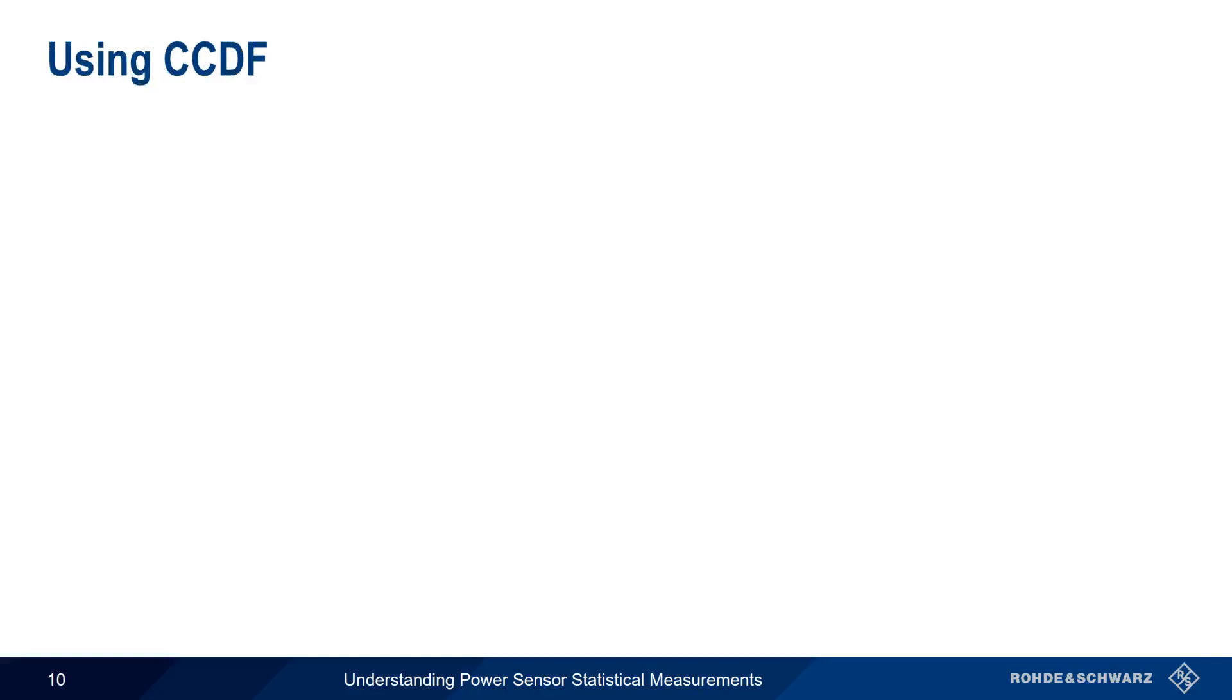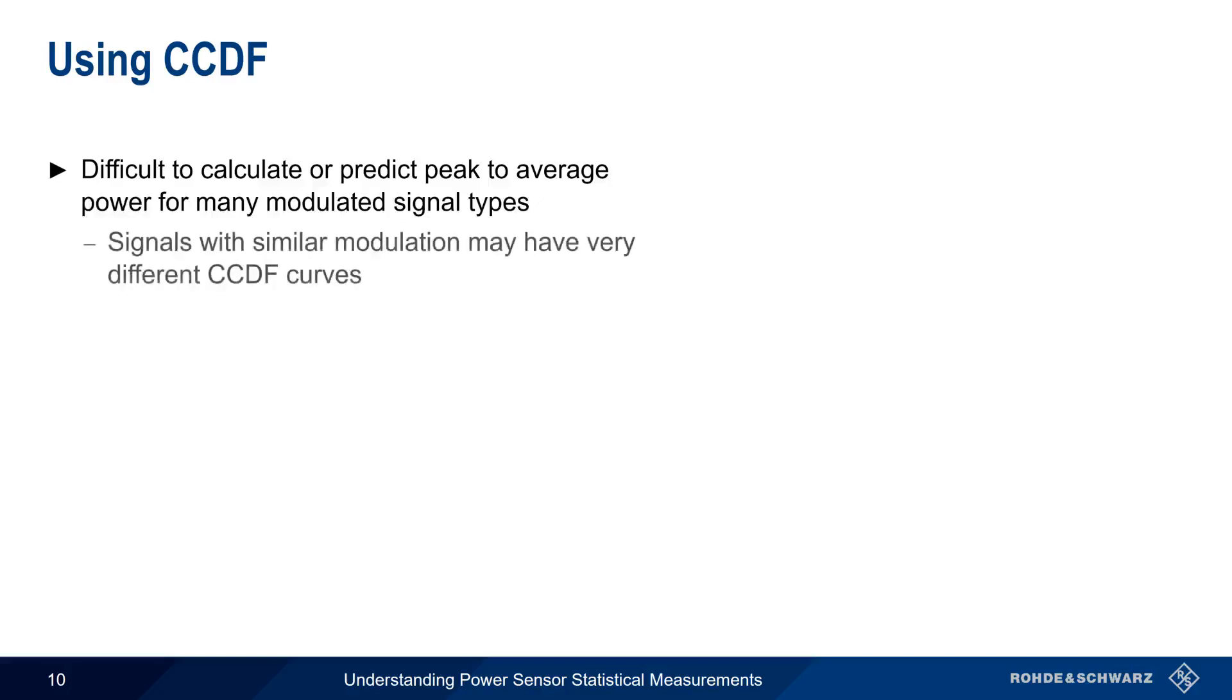CCDF can also be helpful to us in a number of other ways. First, it's difficult to mathematically calculate the peak-to-average power ratio of many modulated signals based solely on that signal's parameters. Even signals with similar modulation may have different CCDF curves. For example, an LTE signal using 64-QAM modulation will have a different CCDF curve than an LTE signal using only QPSK.